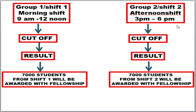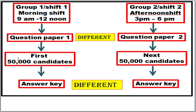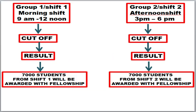Students think: if shift 2 question paper is tough, the cutoff will be 45%. They also think that for one examination cycle, nearly 7,000 fellowships are awarded — including JRF as well as assistant professorship. So they believe 7,000 fellowships will come from shift 1 and another 7,000 from shift 2, making a total of 14,000 students awarded fellowships. This is totally wrong, friends.